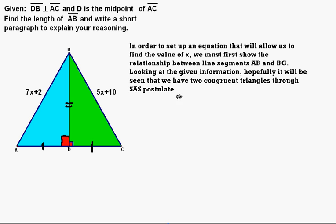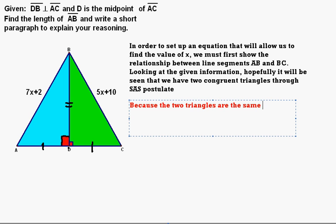Therefore, because the two triangles are the same, then AB is congruent to CB through corresponding parts of congruent triangles.